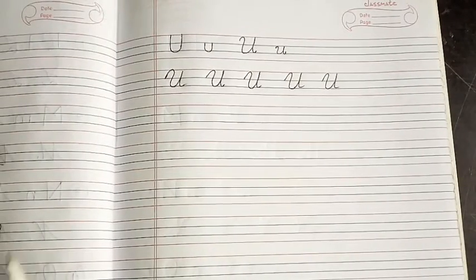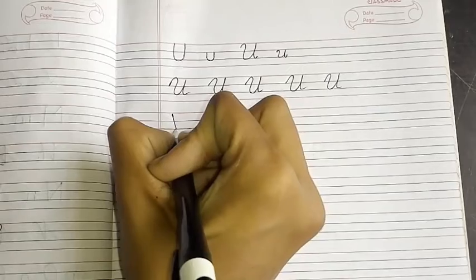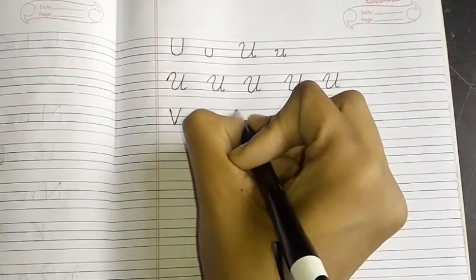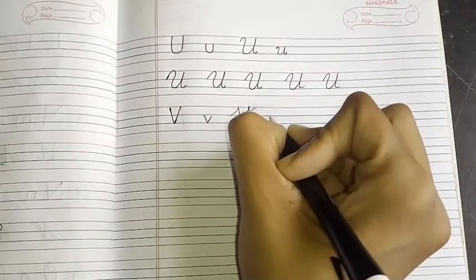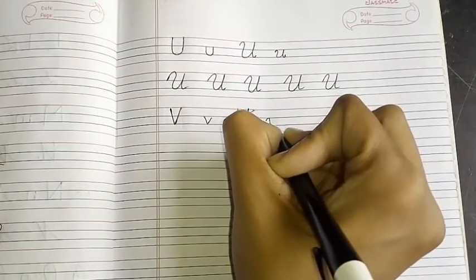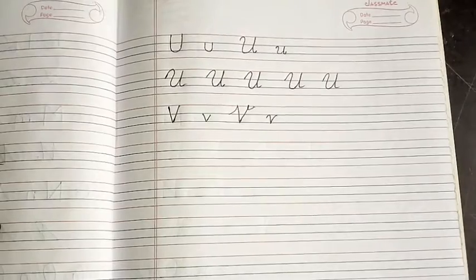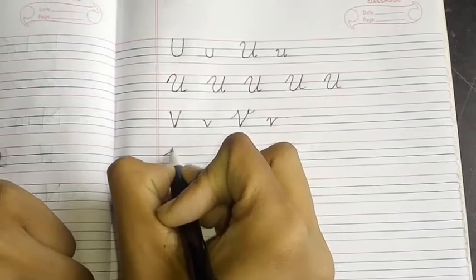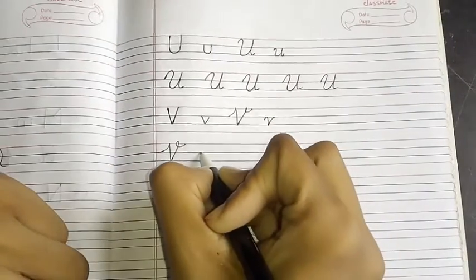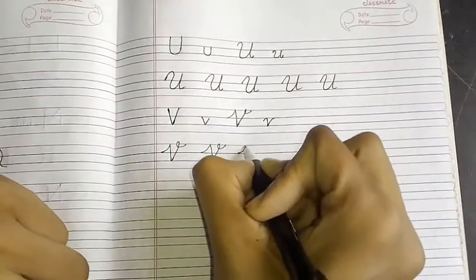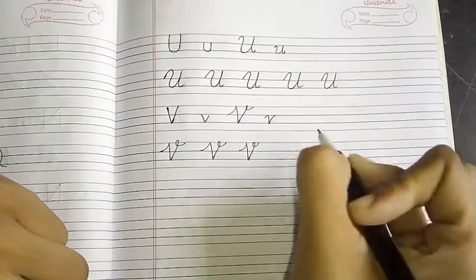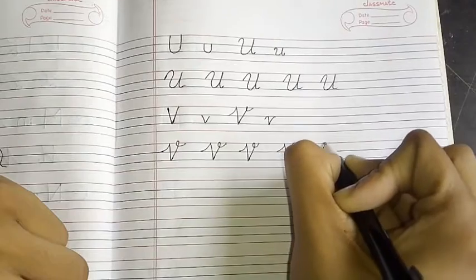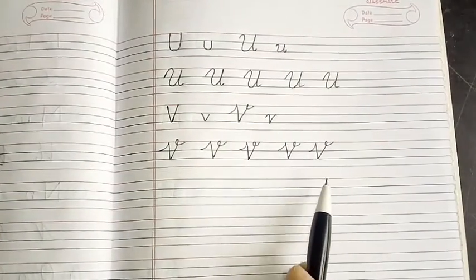Then after U, which letter comes? V. Here we go. Print capital, print small, cursive capital, and cursive small. Now we will practice cursive capital. This is the letter V.